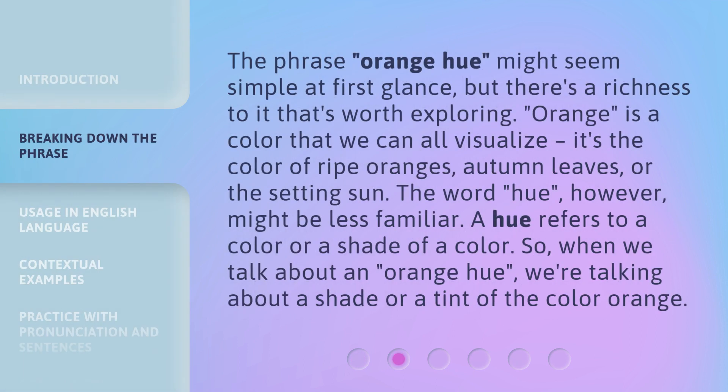The phrase 'Orange Hue' might seem simple at first glance, but there's a richness to it that's worth exploring. Orange is a color that we can all visualize — it's the color of ripe oranges, autumn leaves, or the setting sun. The word 'hue,' however, might be less familiar. A hue refers to a color or a shade of a color. So when we talk about an orange hue, we're talking about a shade or a tint of the color orange.